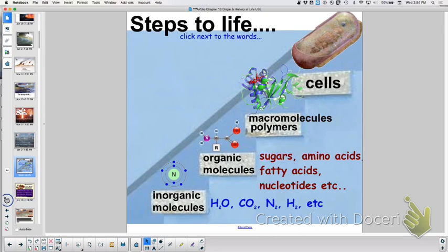So Oparin proposed that, but a man named Miller actually did it. And in about a week's time, did he get these? Yes, he did. So that's saying that could happen. Then your next step is to get from these organic molecules to these polymers, to go from monomers to polymers.